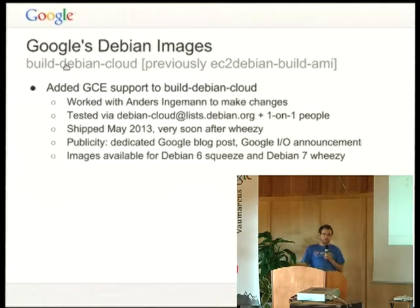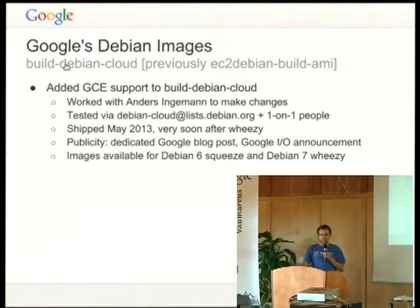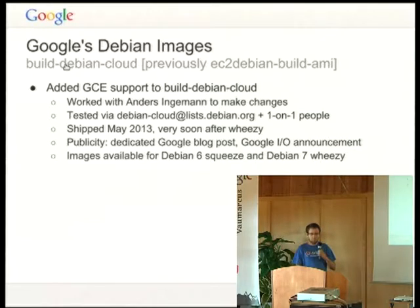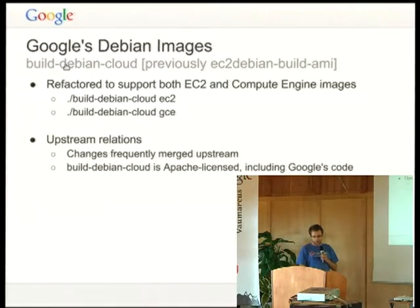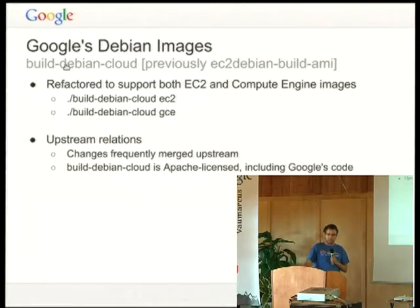Images based on this tool shipped in May, very soon after Wheezy, before Google I/O. There was a blog post and a mention in the Google Compute Engine sessions at I/O. We have images for both Squeeze and Wheezy and intend to proceed to Jessie when the time comes. The tool has sub-commands for both supported clouds. Andrew is good about merging our patches, and he is working on a Python rewrite. Build Debian Cloud is Apache licensed — it's all free software.